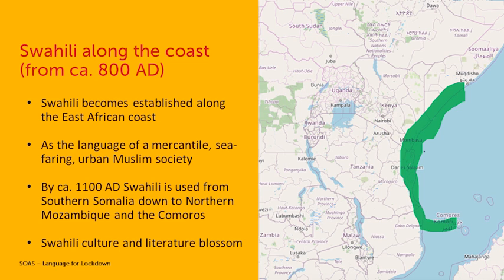There was a link with Islam — it was a city-based language. There were trading port cities along the coast: Lamu, Mombasa, Kilwa, and trading on dhows. Swahili traders used the monsoon winds to trade southwards for about half a year, and then northwards again for about half a year. And by 1100 AD, Swahili was used from southern Somalia down to northern Mozambique and the Comoro Islands.